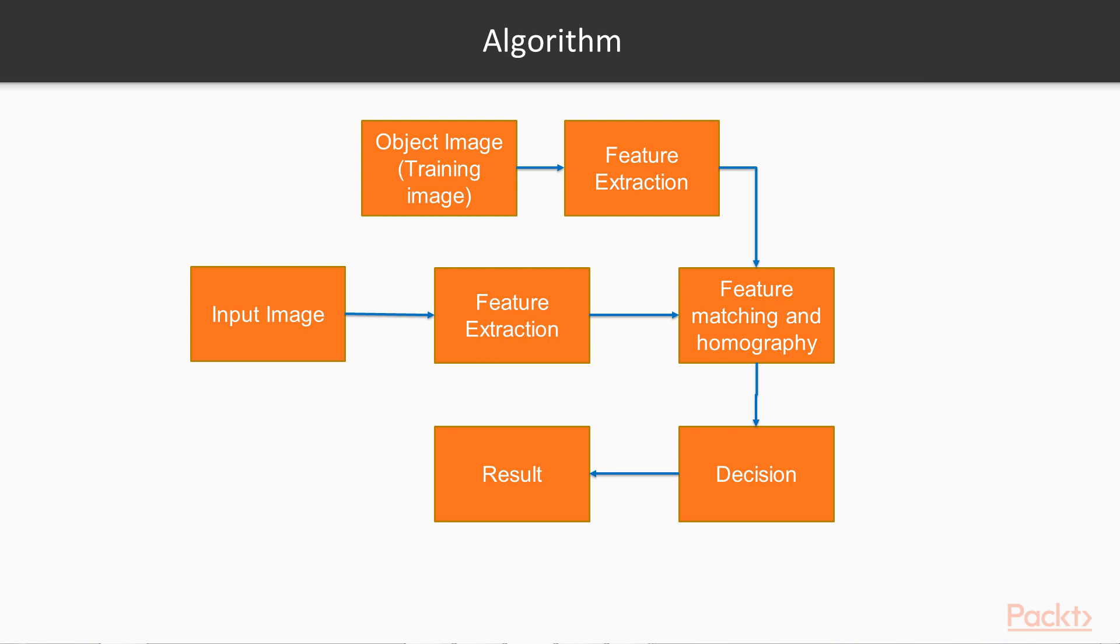Let's devise an algorithm, which is the most important of all three. There is a conventional object recognition algorithm established in literature which uses feature matching to detect objects. First, we take an object image—that is, the reference image of the object—and we find its features and its descriptors.